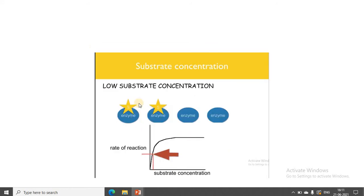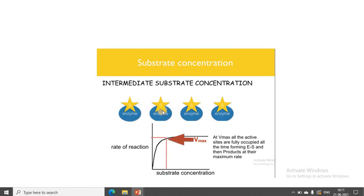To understand why this happens, consider an example: we start with 4 enzyme molecules. Initially, when there is a low concentration — say 2 substrate molecules — the substrates come and bind to the enzyme. The activity increases. As soon as you add the substrate, you get the product. This occurs until all enzyme active sites are occupied.